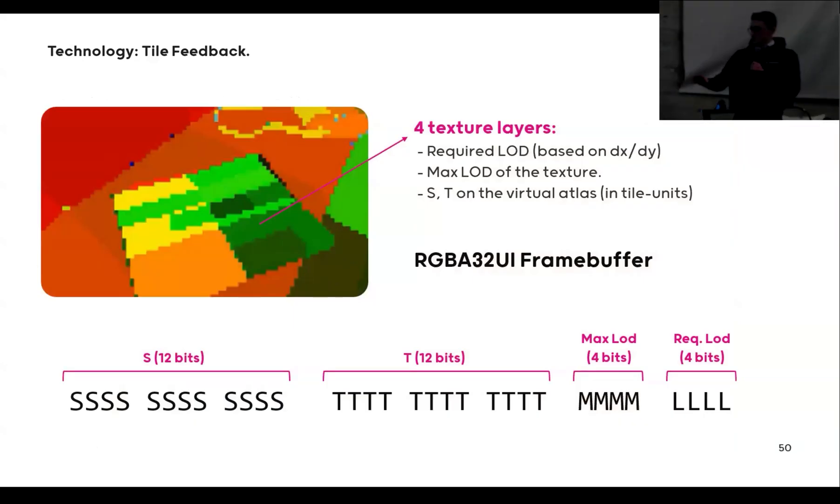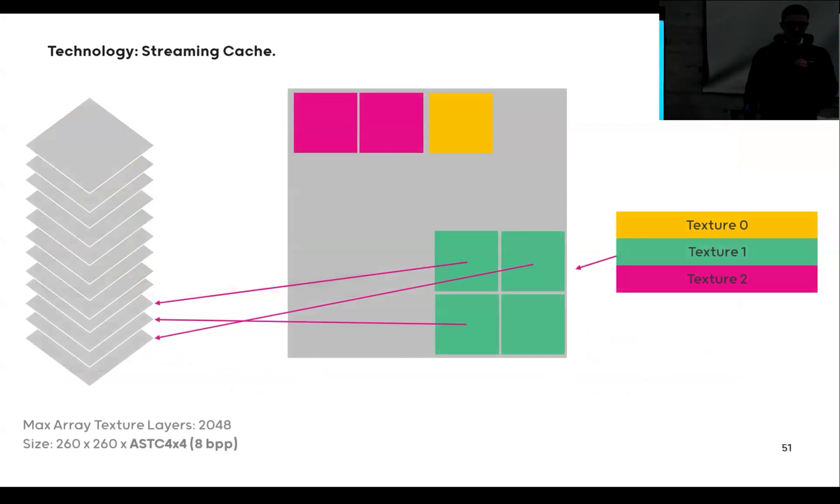That is stored into some crazy encoding with some bit packing and then read back into the CPU with some asynchronous feedback with pixel transfers and whatnot. So that kind of works. And I saw a couple of you kind of flinched when I said 260x260.